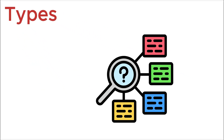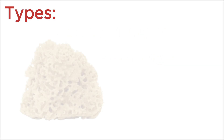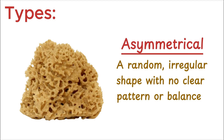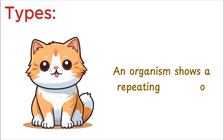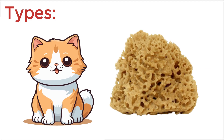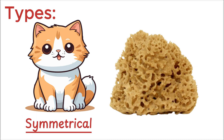To classify and organize living organisms, scientists often use the terms symmetrical and asymmetrical. If an organism has a random, irregular shape with no clear pattern or balance, scientists call it asymmetrical. This means the organism does not have a defined body plan — there's no way to divide it into equal halves. A classic example of this is a sponge. On the other hand, if an organism shows a repeating or balanced pattern, it is said to have symmetry, meaning its body parts are arranged in a specific, organized way, often around a line or a central point.